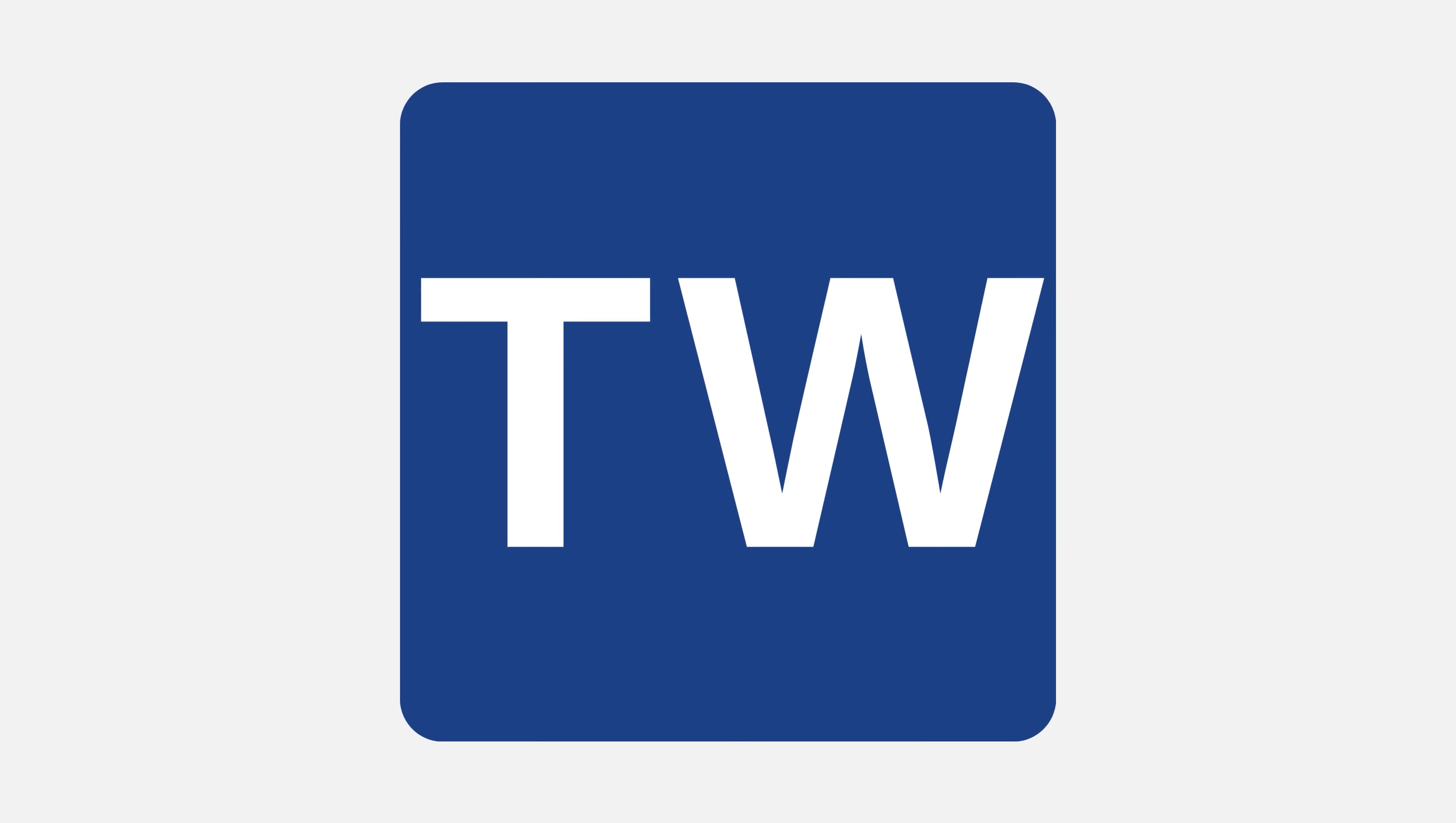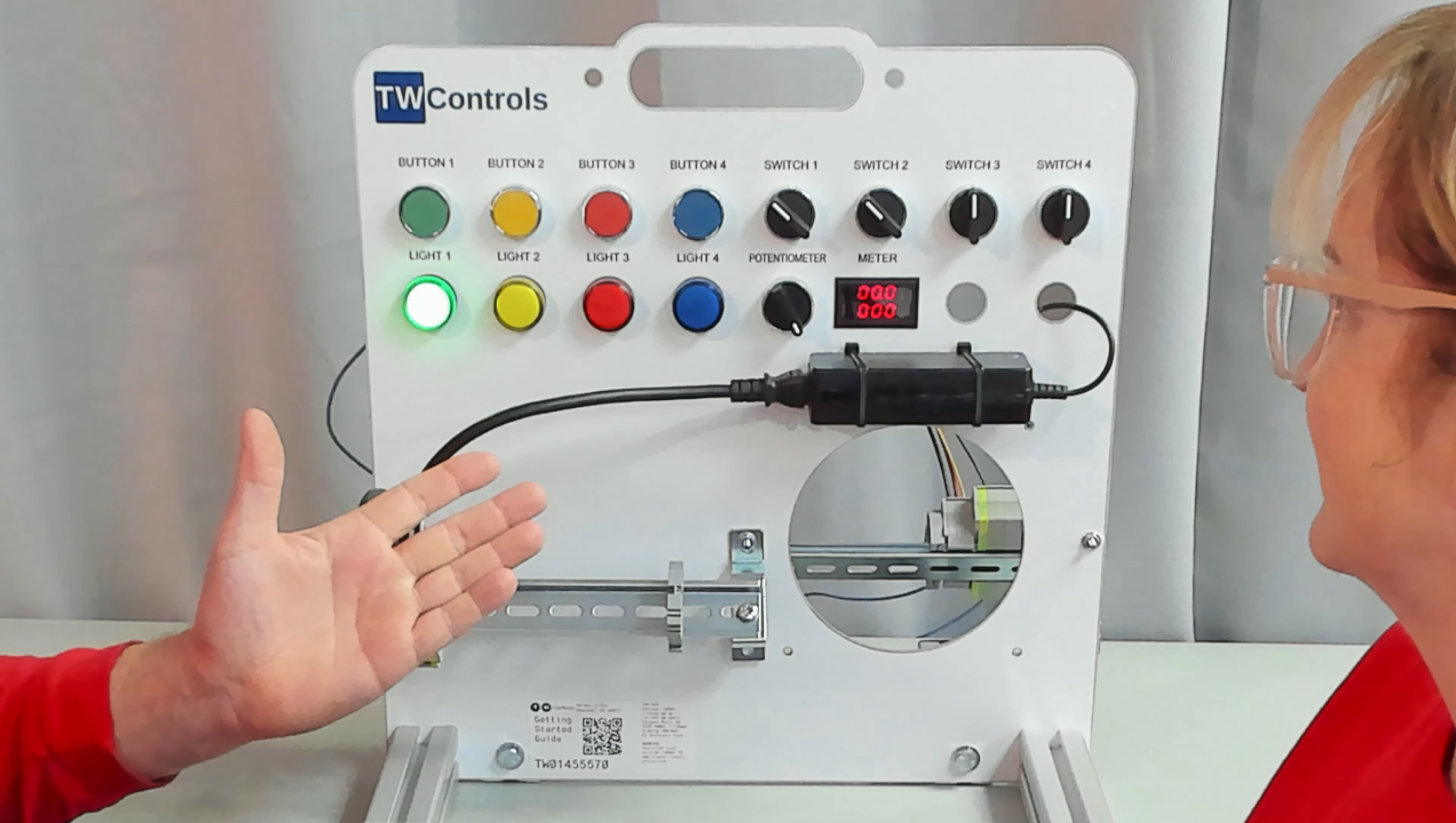Then on our trainers, the left set of terminal blocks is our plus 24-volt, and the right set is the minus 24-volt. So I'm going to connect one to the plus and the other to the minus, and our green light lights up.